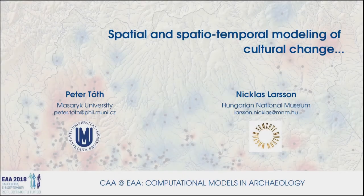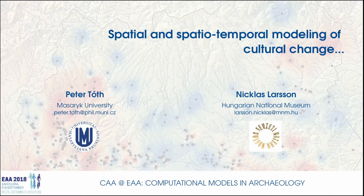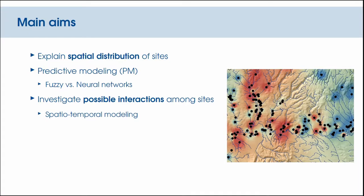Ladies and gentlemen, we would like to thank the organizers for the opportunity to present our paper about modeling cultural change. In this talk, we would like to focus on two issues: first, with the use of predictive modeling — particularly fuzzy logic and neural networks — we would like to explain the spatial distribution of sites, and secondly, using spatio-temporal modeling, we want to investigate possible interactions among sites.